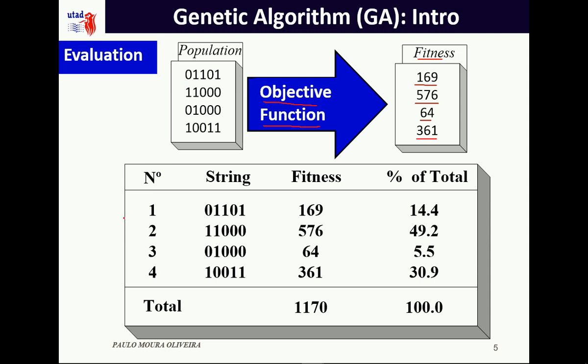If we plot a table with the index of each element and the strings, we can see that the best one in terms of maximization is the second one. If we sum the fitness values and divide each by the sum, we determine the relative merit in percentage of each element. We can see a quite strong element in this randomly generated population — the second one is quite strong, and the second best is the fourth one.